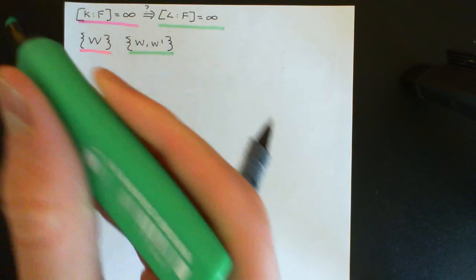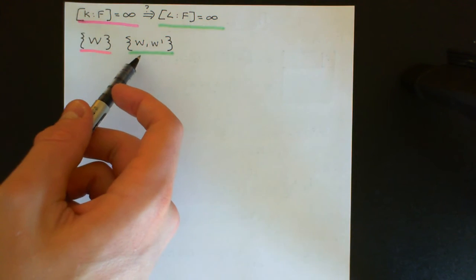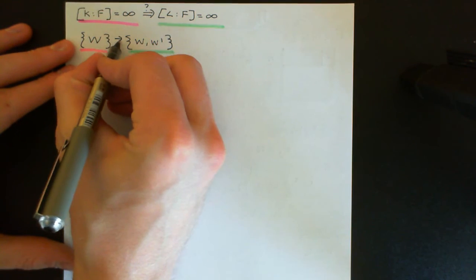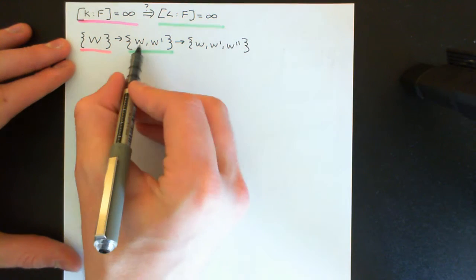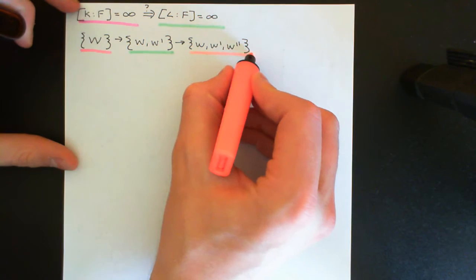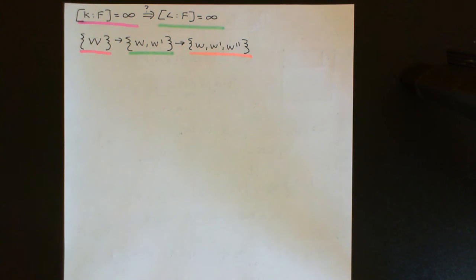This set of two vectors is also not going to span the entire intermediate field K, because the degree is infinite — it wouldn't be infinite if a finite set of vectors spanned it. So we can add in another vector W double prime, and the set remains linearly independent. We can keep going: W, W prime, W double prime, and so on, adding vectors outside the span each time, and this can continue forever.